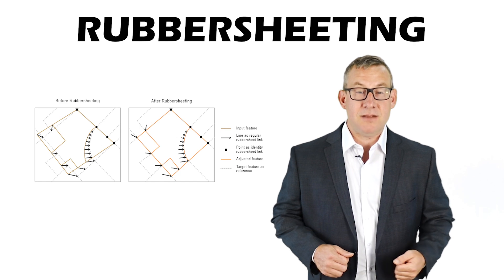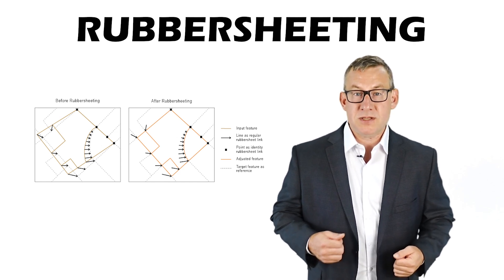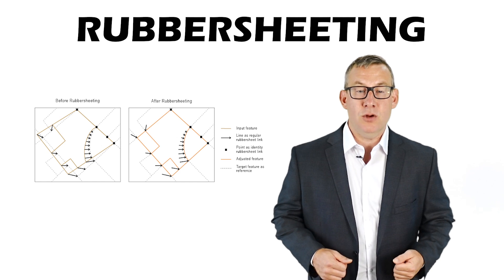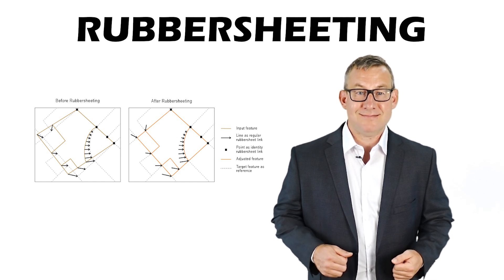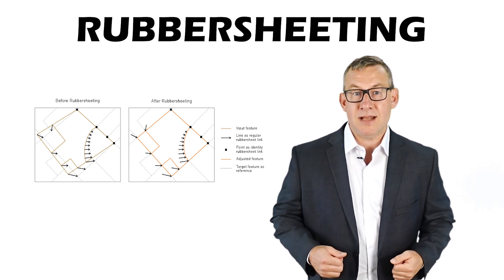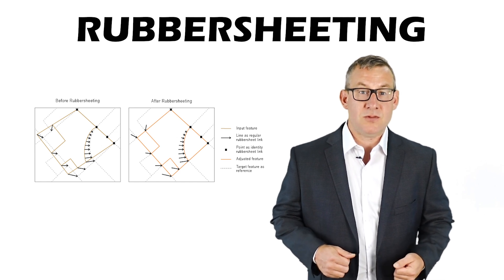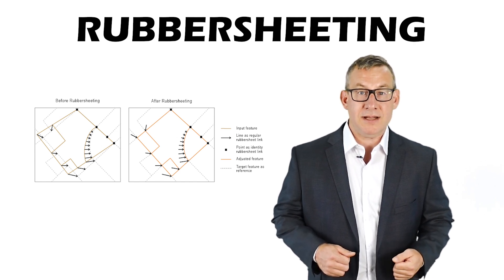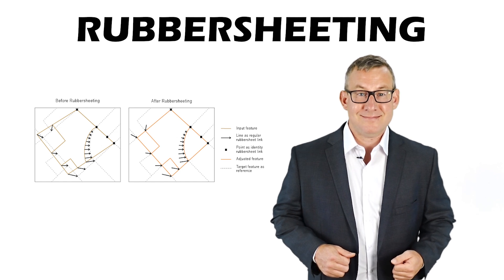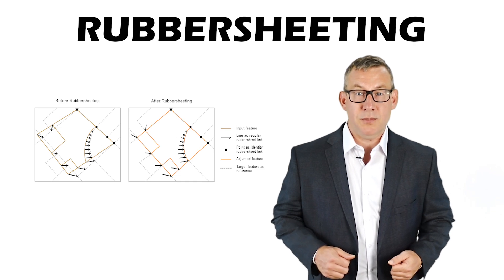Rubber sheeting is a form of coordinate transformation that warps a vector dataset to match a known geographic space. It is most commonly needed when a dataset has systematic positional error, such as one digitized from a historic map of low accuracy. Rubber sheeting normally uses polynomial equations.